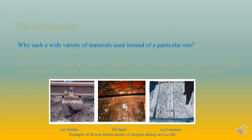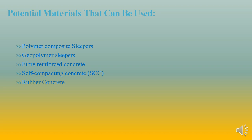Why is such a wide variety of materials used instead of a particular one? The answer is that none of the traditional materials — timber, steel, or concrete — satisfies all the requirements of the slippers to resist mechanical, biological, and chemical degradation. Potential alternate materials include Polymer Composite Slippers, Geopolymer Slippers, Fiber Reinforced Concrete, Self-Compacting Concrete, and Rubber Concrete.